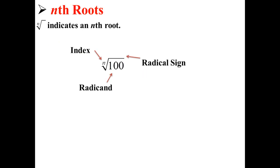Here's how we write nth roots. The square root symbol with an n next to it indicates an nth root. Here, 100 is the number, is the radicand. We have a radical sign above it, and n is called the index.